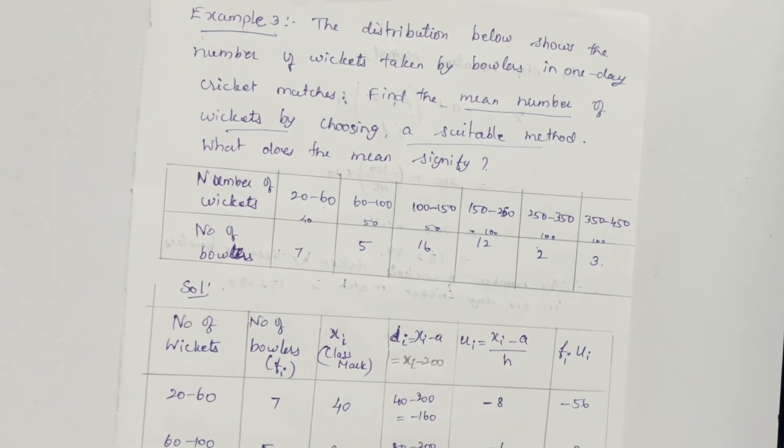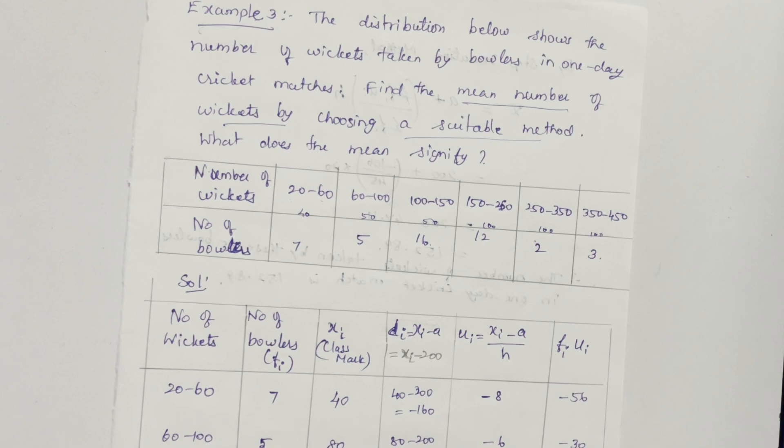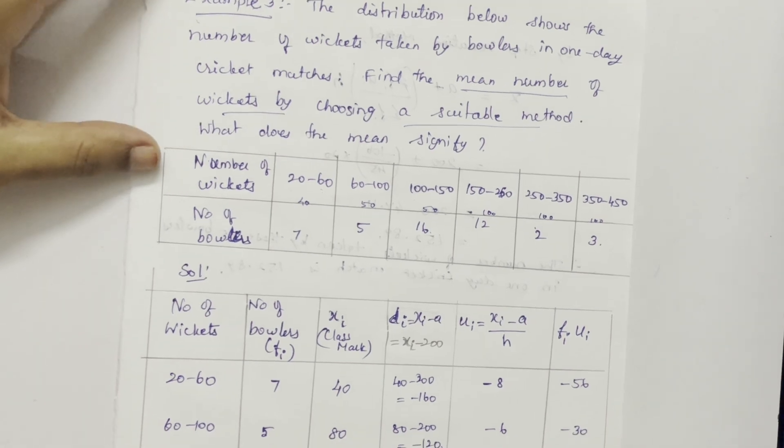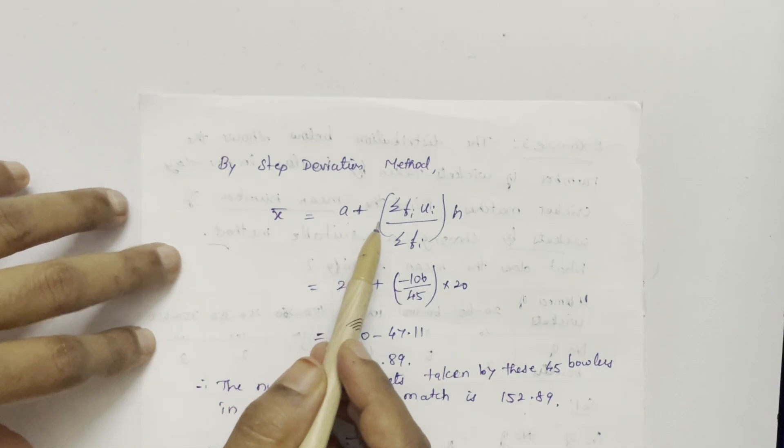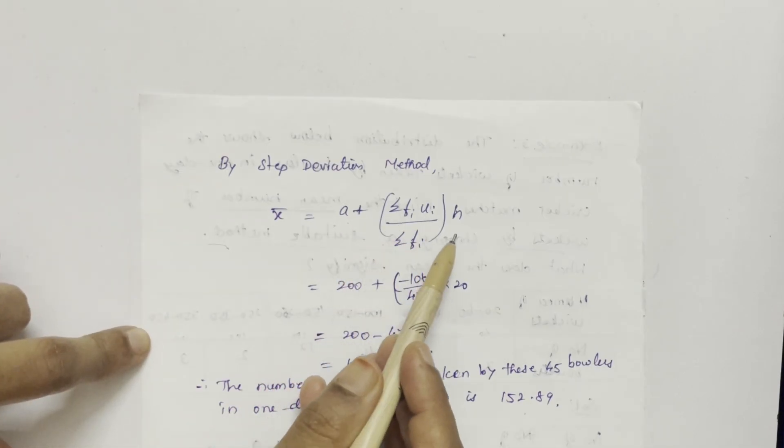So we have to go with the third method, that is step deviation method. The formula for finding step deviation is A plus sigma FI UI by sigma FI into H.